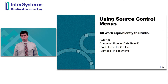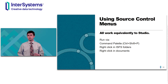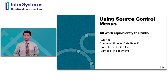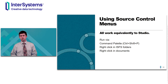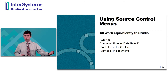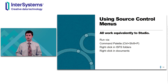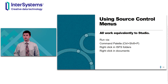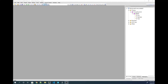Now that we've configured source control for a namespace, we can look at how it actually works in both Studio and VS Code. The short of it is, it's pretty much the same. The menus that are key to many source control implementations can be run through the command palette in VS Code, or by right-clicking in a folder for a project using ISFS — a way of enabling server-side editing in a folder structure alongside other folders on the client. You can also right-click in a document you're editing in VS Code and see the menus that way. For my second demo, I'll walk through parallel processes for creating a class, adding it to source control, submitting it, checking it out again, making changes, and reverting those changes.